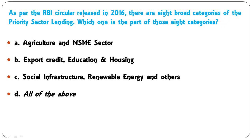Which ones are part of those eight categories? Options include: agriculture and MSME (micro, small, medium enterprise sector); export credit; education; housing; social infrastructure; renewable energy; and others — or all of the above? All of these are part of the eight broad categories. Agriculture, MSME, export credit, education, housing, social infrastructure, renewable energy, and others make up all eight. So D — all of the above — is the correct answer.